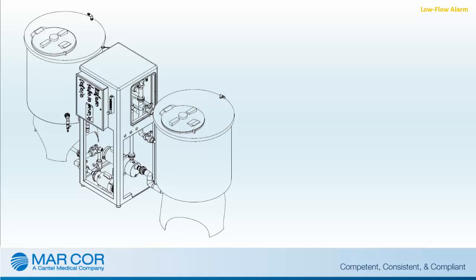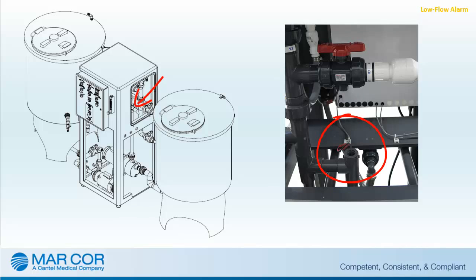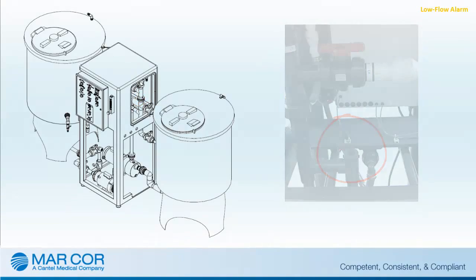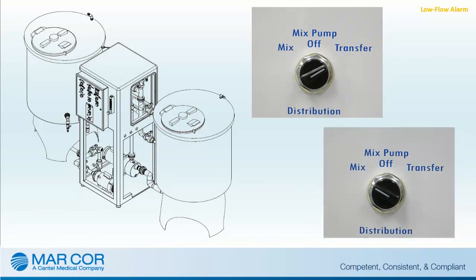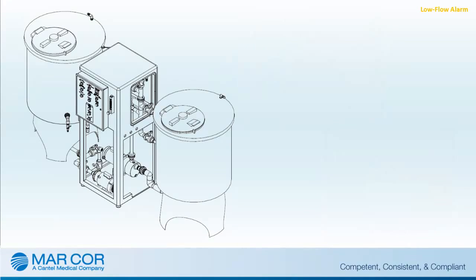A mix pump low-flow alarm condition is created when the solution velocity in the mix pump piping drops below 2 gallons per minute as measured at the flow switch on the output side of the mix pump. The mix pump hand switch must be in either the transfer or mix position and the mix pump low-flow switch not satisfied to activate the alarm. The mix pump shuts off in the absence of solution to prevent pump damage. The low flow condition is typically observed when the solution level in the mix tank empties while being transferred to the distribution tank.